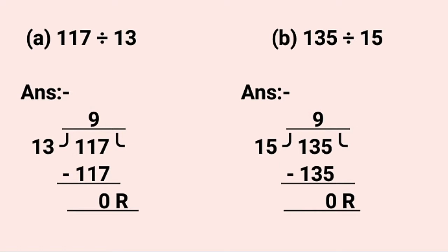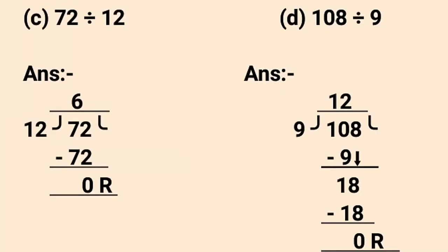B part is 135 divided by 15. We know 5 nines are 135. Now 135 minus 135 gives us 0 remainder. So this is the answer. C part is 72 divided by 12. Let's start dividing. 12 sixes are 72. Now 72 minus 72 gives us 0 remainder. So this is the answer.